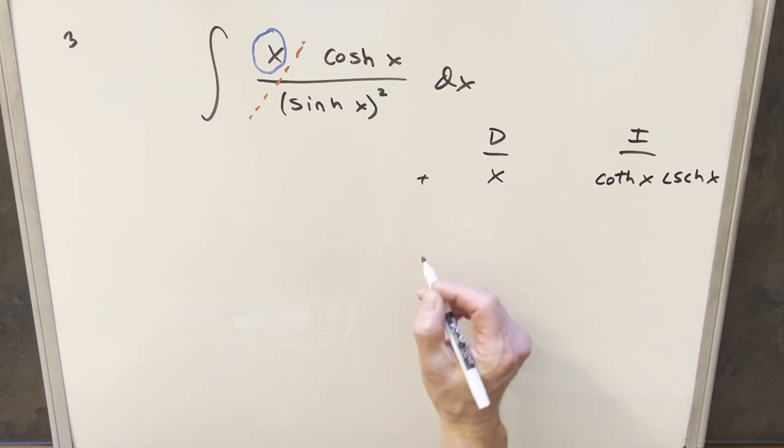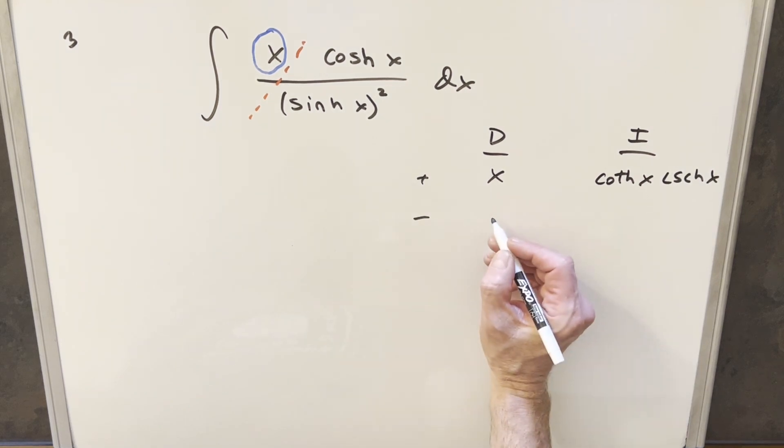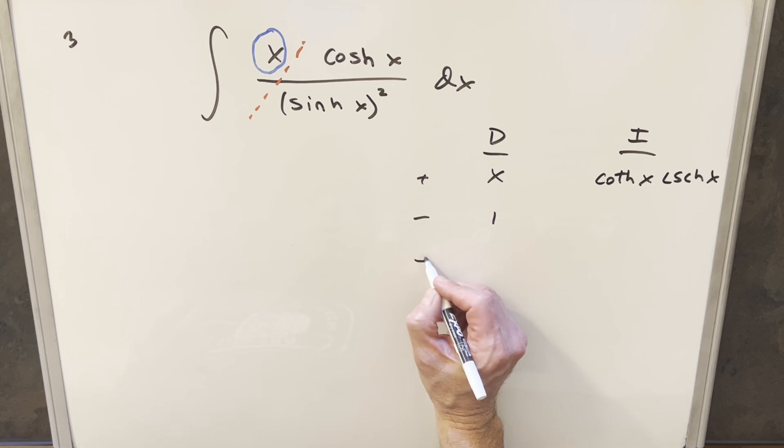And then on the left side, we'll just differentiate. So the derivative of x, this is going to be one. And then derivative of this, this is going to be zero.